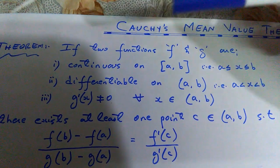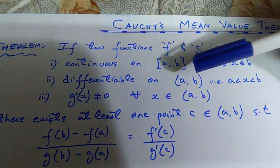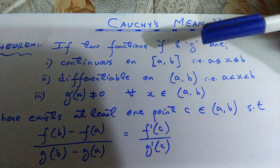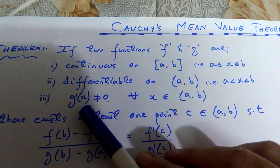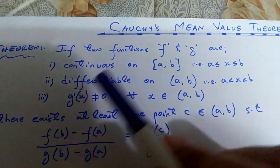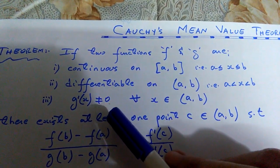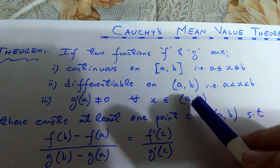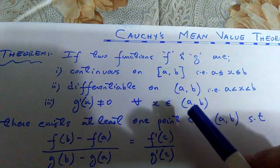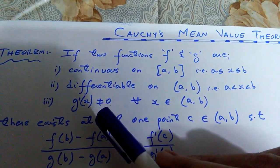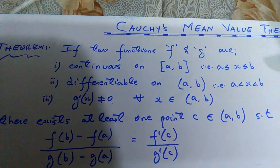If they are continuous and differentiable on the open interval (a, b), plus the derivative of function g should not be equal to zero. No matter what point you are taking within this open interval, at any point, the derivative of function g should not be equal to zero.